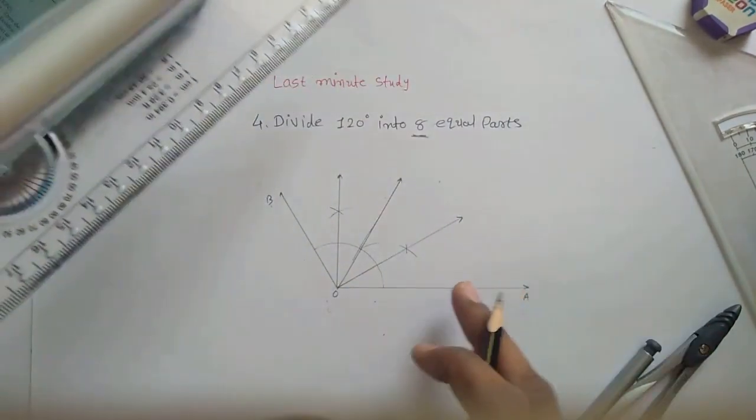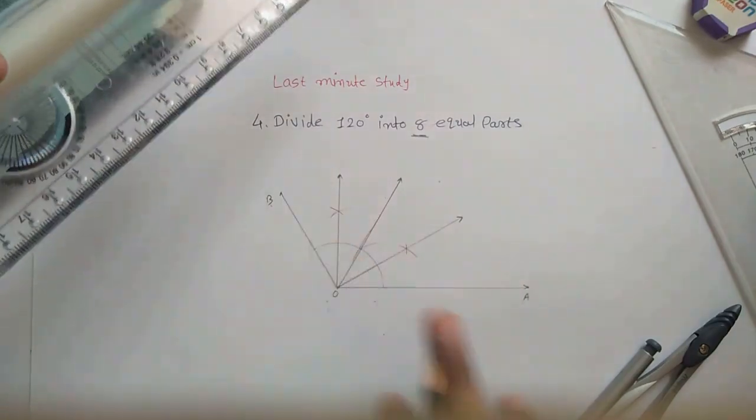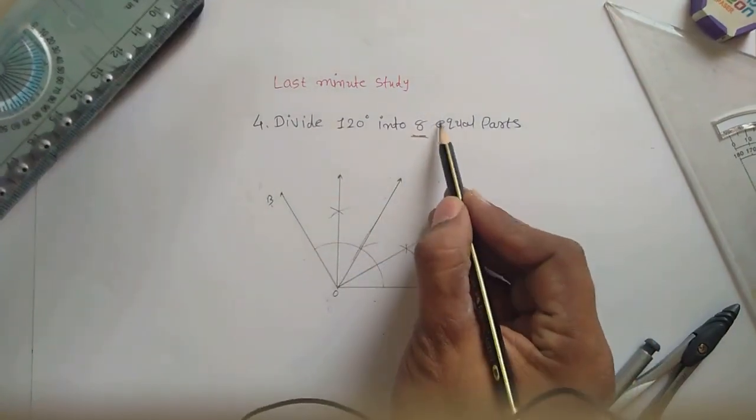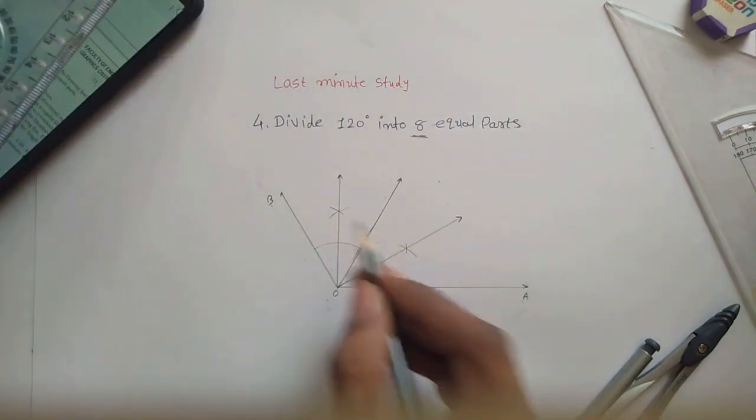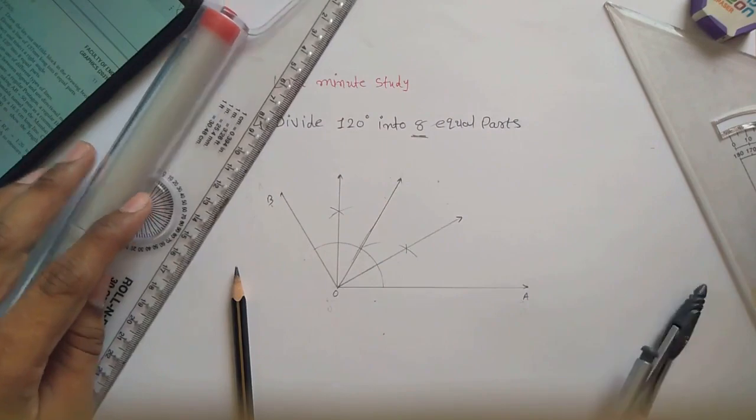So we have divided this into one, two, three, four equal parts, but we need eight equal parts. So again, we have to bisect each and every division with the same method which we have used earlier.